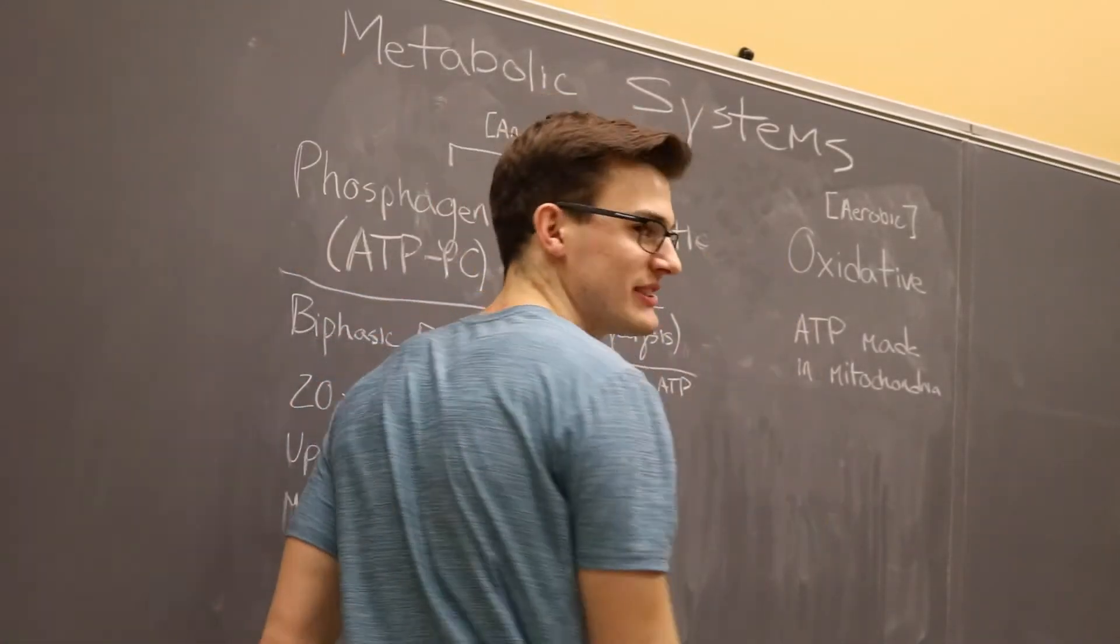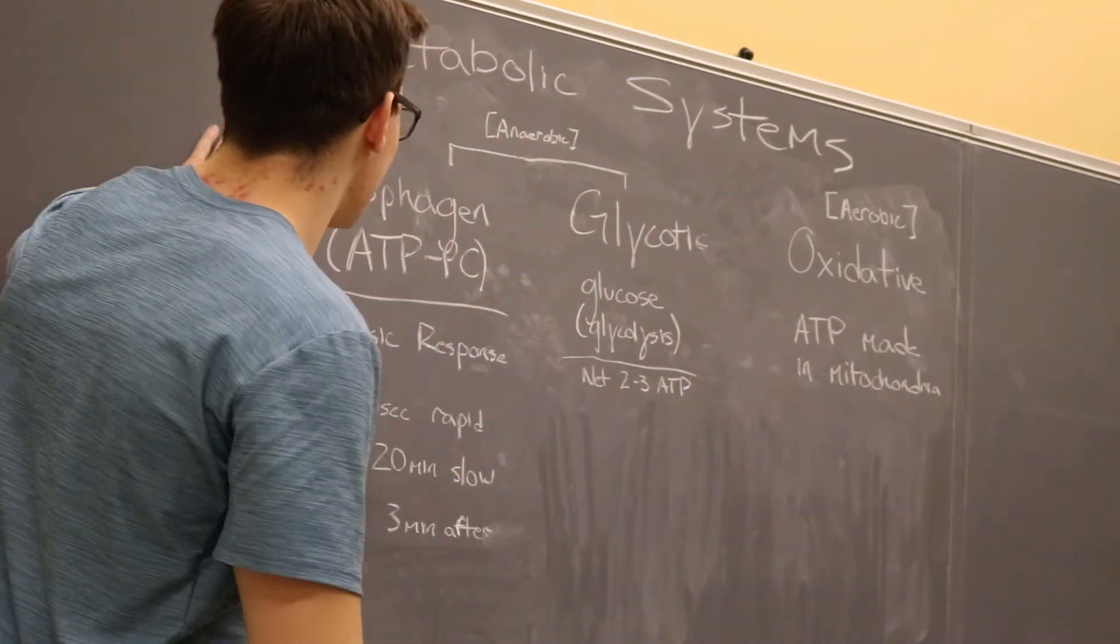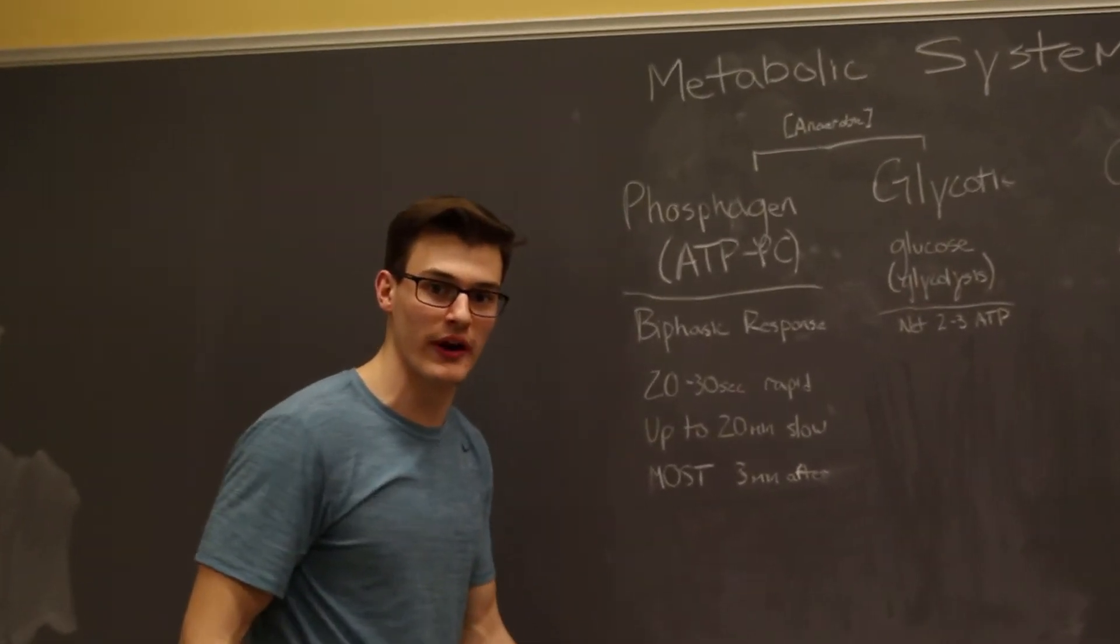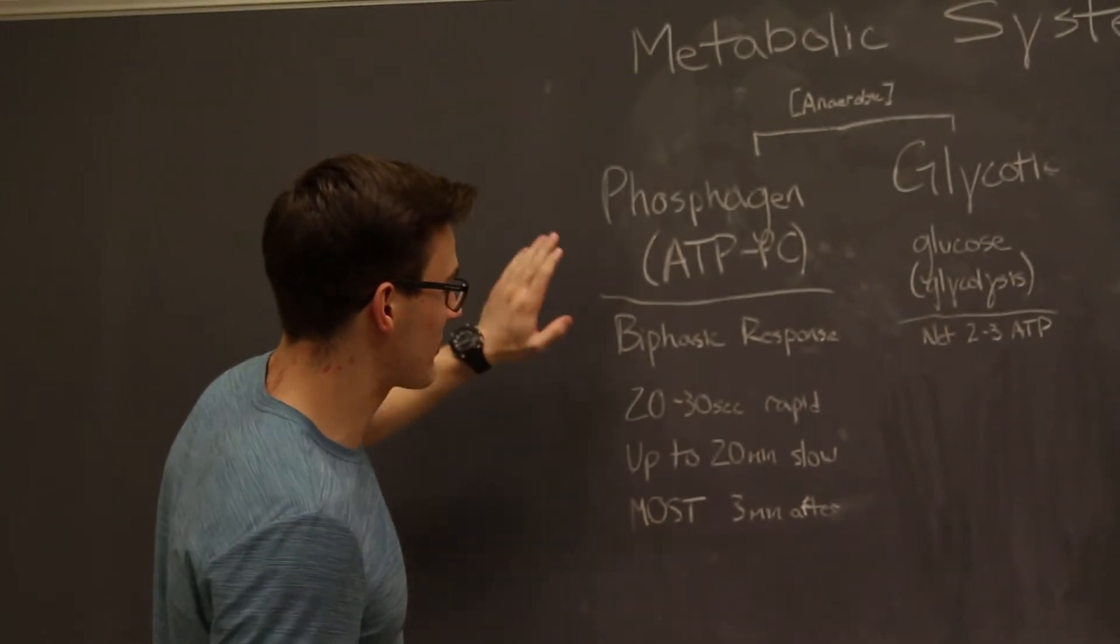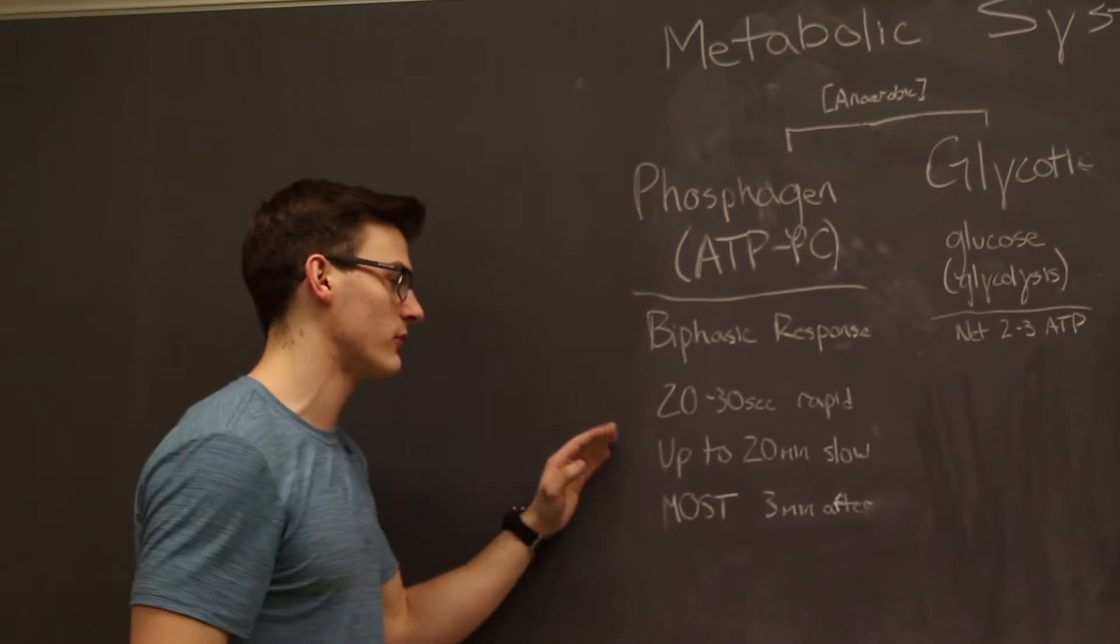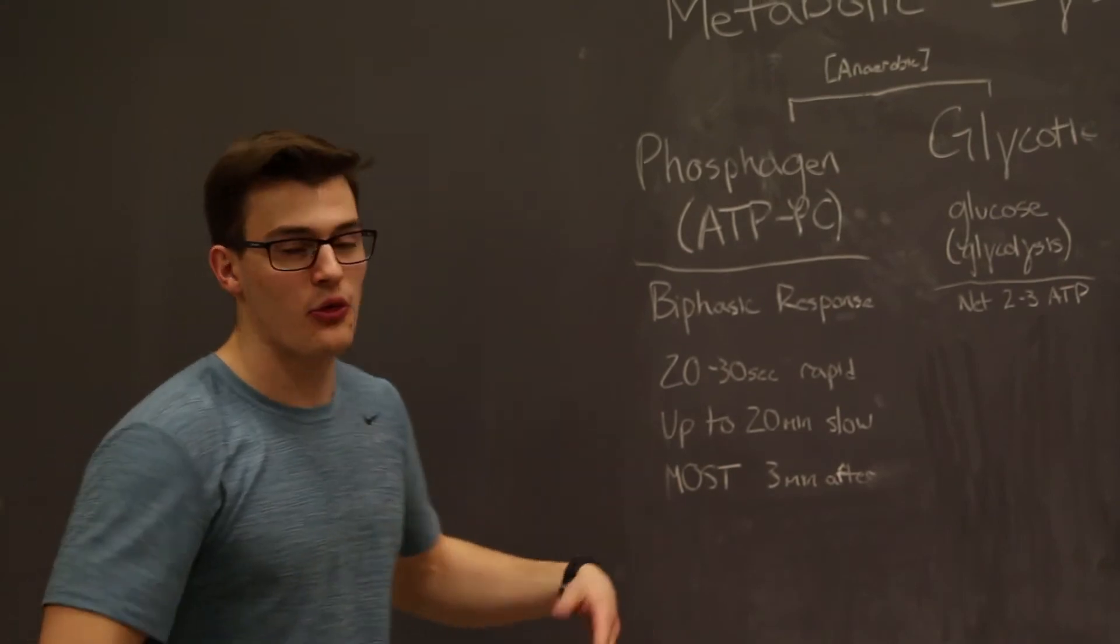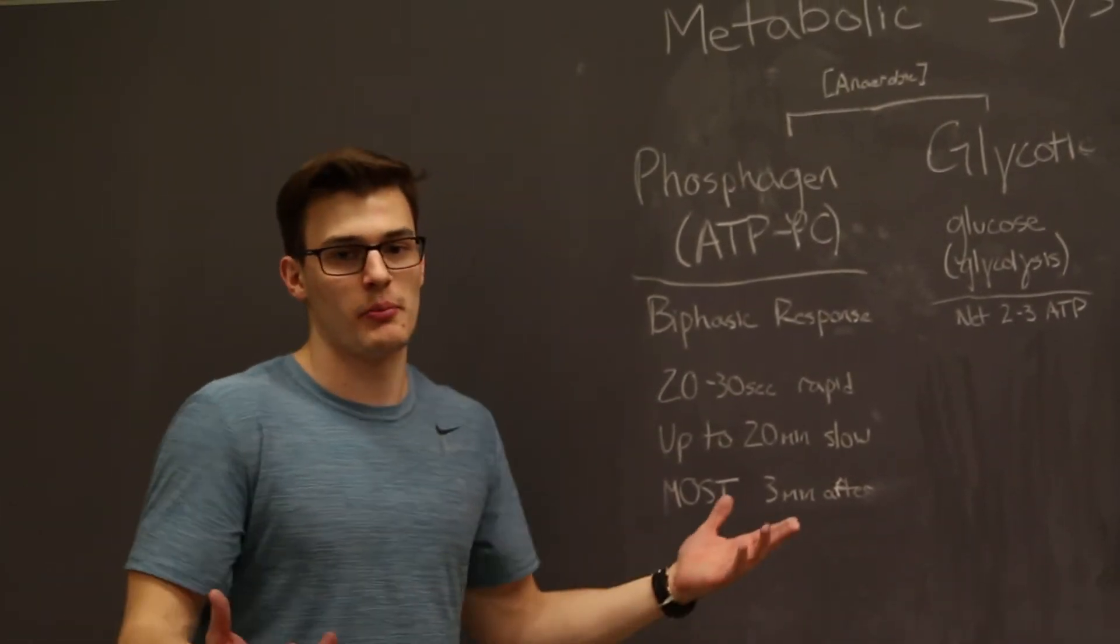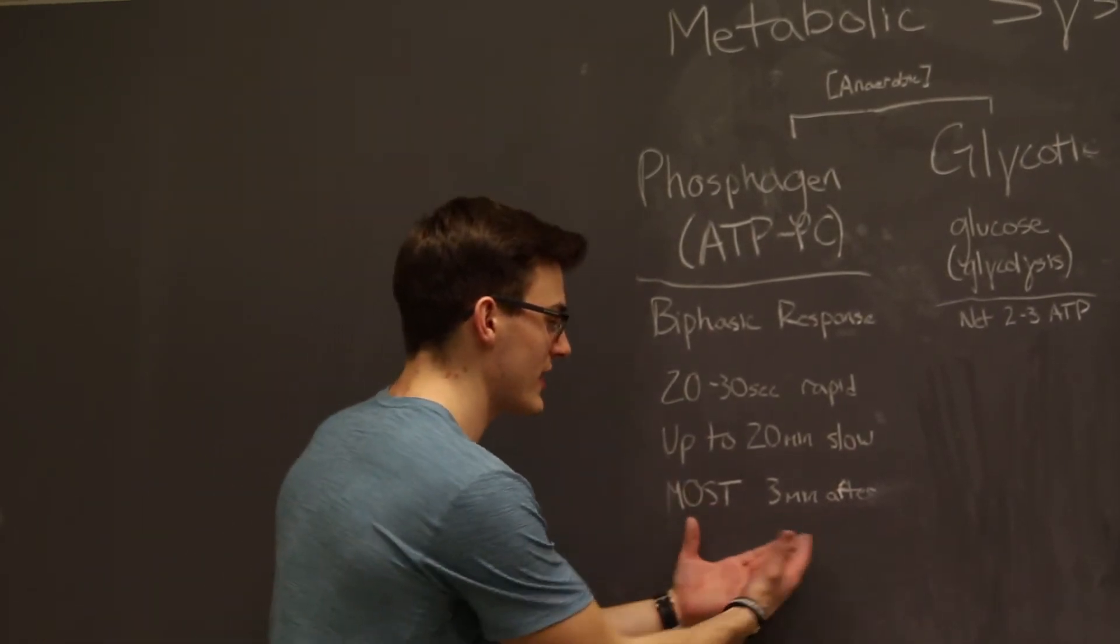Metabolic systems. You still with me? Anaerobic and aerobic. Let's talk about specific pathways. Phosphagen, ATPC—readily available, already in your body. You want to be quick? You like this pathway a lot. Something called the biphasic response, 20 to 30 seconds rapid recovery, up to 20 minutes of slow recovery. It's worth noting that three minutes after your exercise most of it is going to be replenished. So from this standpoint it doesn't make much sense to rest longer than three minutes.